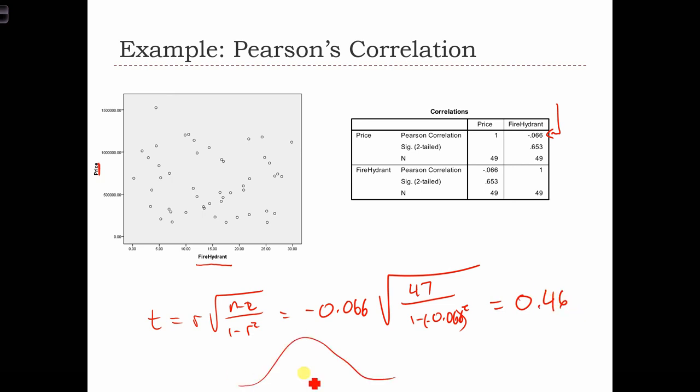So here's our normal curve, and this is 0, and here's our critical values. Our test statistic is somewhere over here, well inside the zone of acceptance. So in this case, we would not reject the null hypothesis, and this scatter plot isn't providing any evidence that the population correlation between these two variables is different to 0.